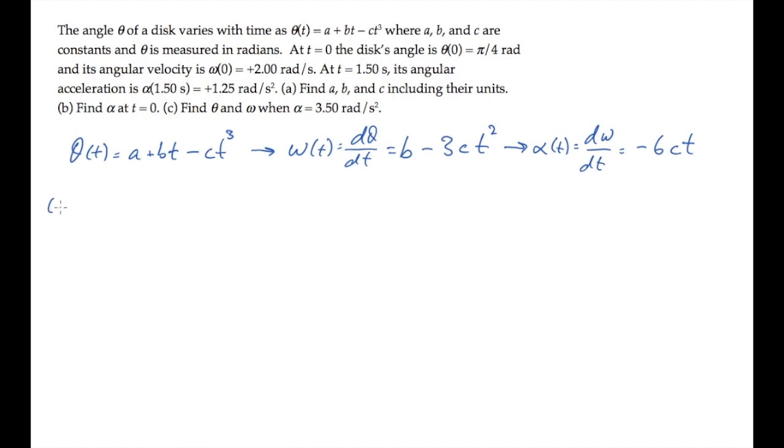We can use the value of alpha they tell us to find the constant c. Alpha at one and a half seconds is 1.25 radians per second squared. We can set that equal to the expression, minus 6c times the time, one and a half seconds, and solve for the constant c. When you calculate, you find that it equals negative 0.139 radians per second cubed.